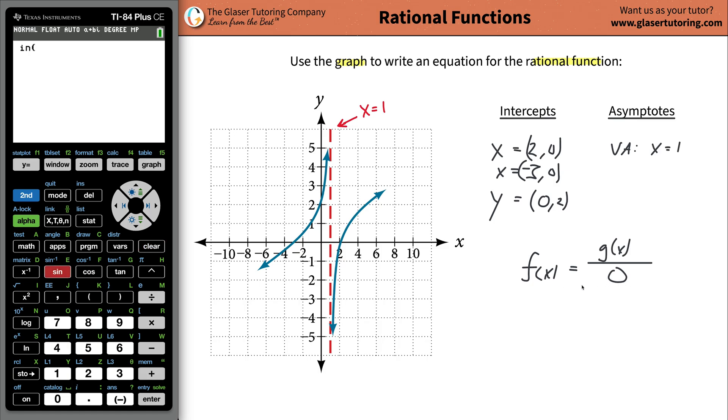So we cannot divide by zero. So that's what I'm looking to do now. I'm looking to figure out, X cannot be one because there's a vertical asymptote there. So the way I'm going to write it then is I'm going to write X minus one.